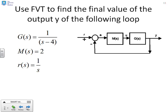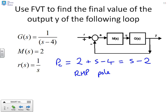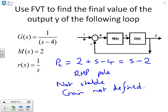Another example with an unstable pole. Check: is the closed loop stable? The closed loop pole polynomial is PC equals 2 plus S minus 4, giving S minus 2 — a right half plane pole, so not stable. Therefore the gain is not defined. If the resulting transfer function has right half plane poles, there is no steady state, so there's no point trying to find the steady state gain.